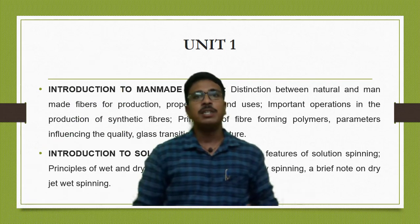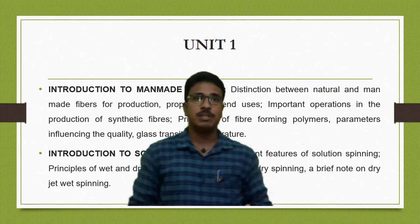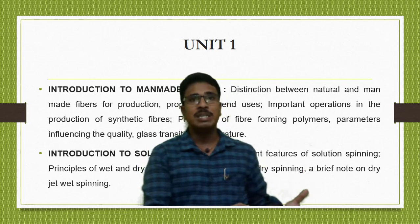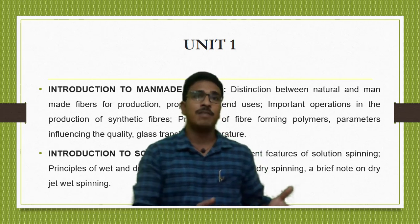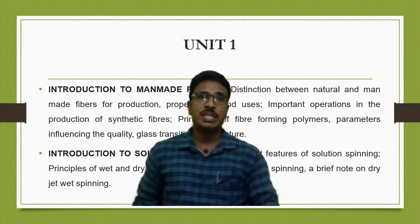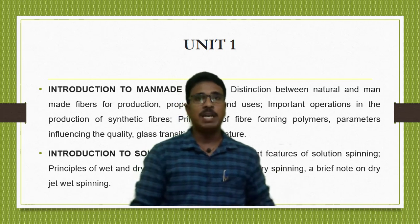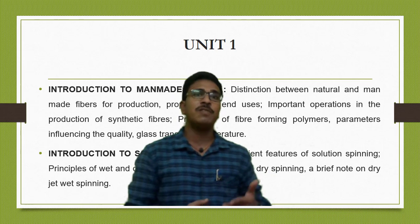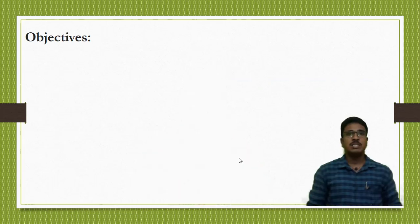In the introduction part you are going to study the differences between natural and man-made fibers with respect to production, properties, and end-use applications. You will also study the principles of forming man-made fibers — the basic requirements a polymer must possess to be converted into continuous filament yarn. We'll also cover glass transition temperature. Then we move to solution spinning — the manufacturing process of continuous filament yarns.